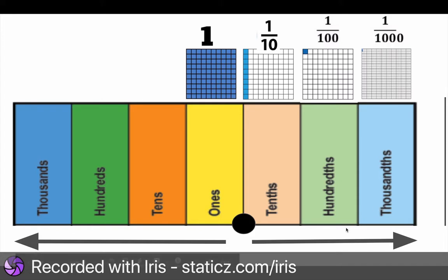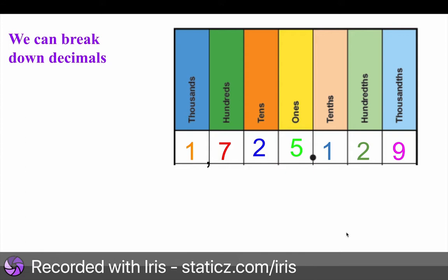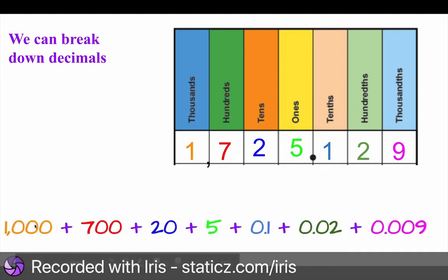So let's look at another example. This number is 1,725 with 1 tenths, 2 hundredths, and 9 thousandths. I could also write it as 1,000 plus 7 hundreds plus 20 plus 5.